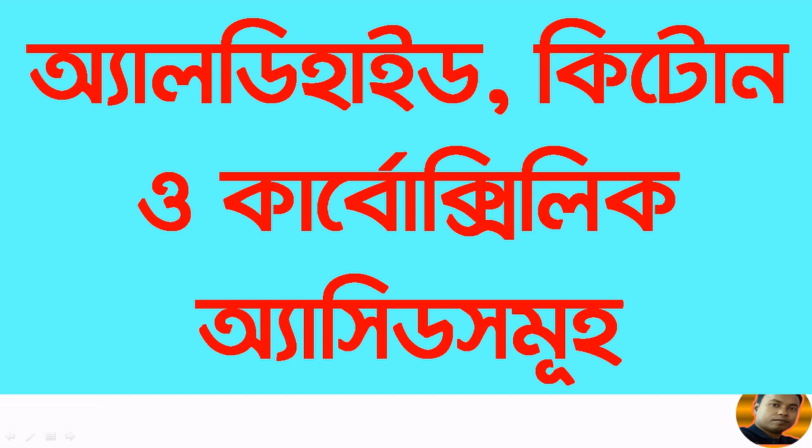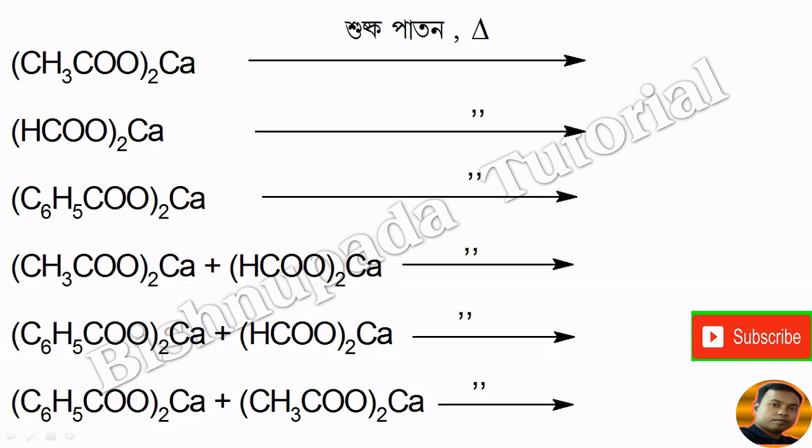This chapter covers aldehyde, ketone, and carboxylic acid. The first step involves calcium acid — calcium formate, calcium benzoate — and a mix of calcium acetate, calcium formate, benzoate, and acetate.